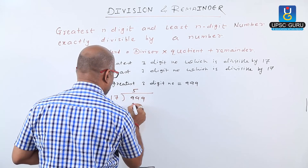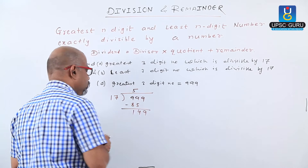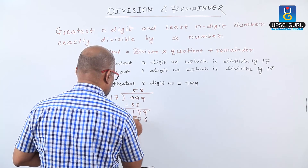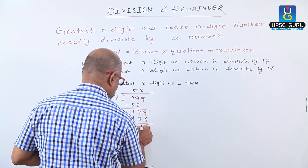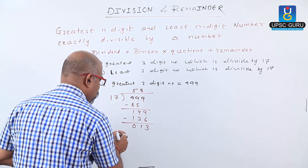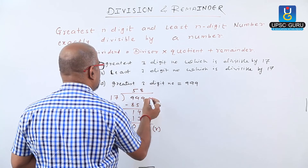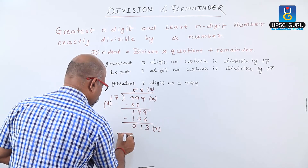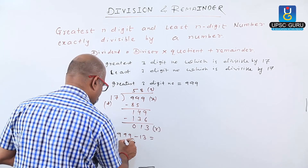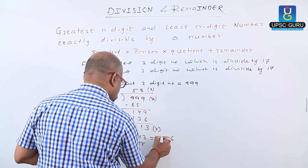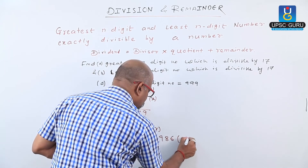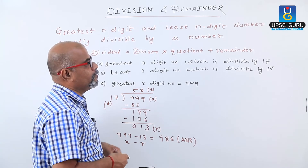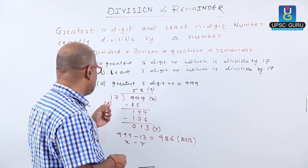Dividing 999 by 17: 17 times 5 is 85; 17 times 8 is 136. The remainder R is 13. So X is 999, D is 17, and quotient Q is 58. Therefore, 999 minus 13 equals 986. Our answer is 986 — the greatest three-digit number. When 986 is divided by 17, the remainder equals 0, so 986 is exactly divisible by 17.